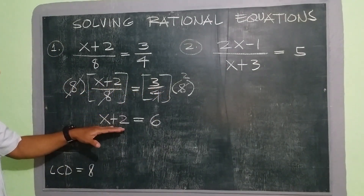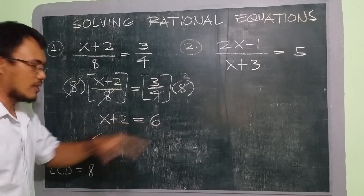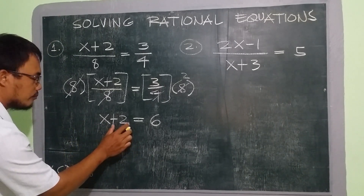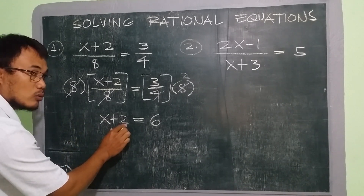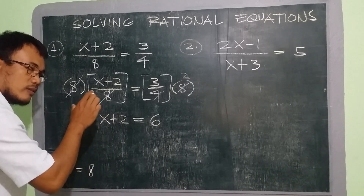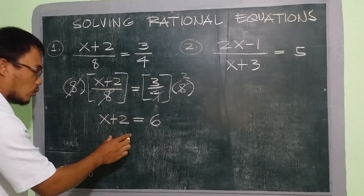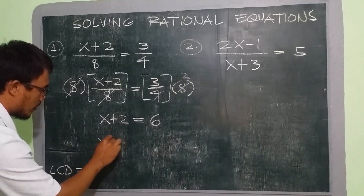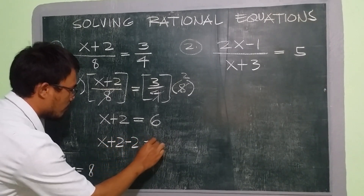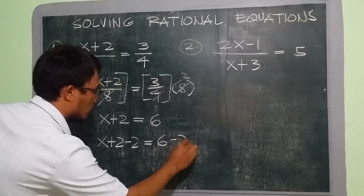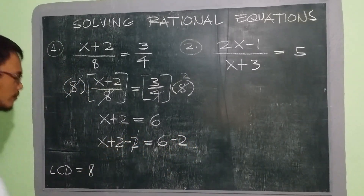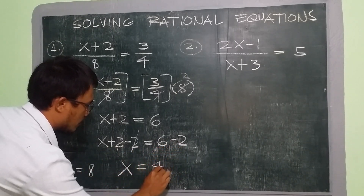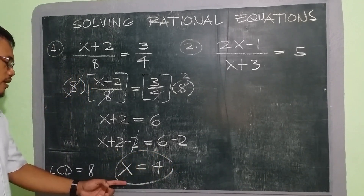After simplifying, the result is x plus 2 equal to 6. Now we're going to simplify further to get the value of x. We need to put 2 on the other side — we subtract 2 from both sides. So x plus 2 subtract 2 equals 6 subtract 2, and x will remain. So x equals 6 minus 2, which is 4. Therefore, our x is 4.